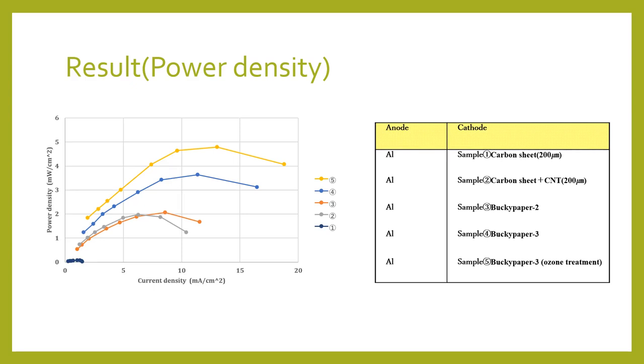And no ozone treatment became high next. From this, it was confirmed that the output was increased by ozone treatment. In comparison between two buckypaper layers and three buckypaper layers, it was found that the output increases as the film thickness increases.